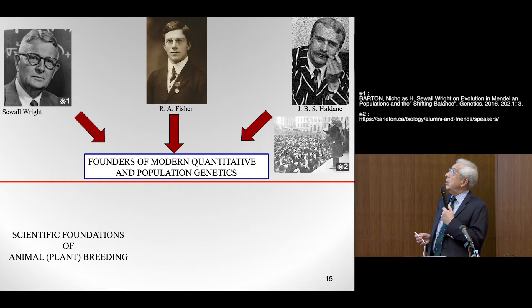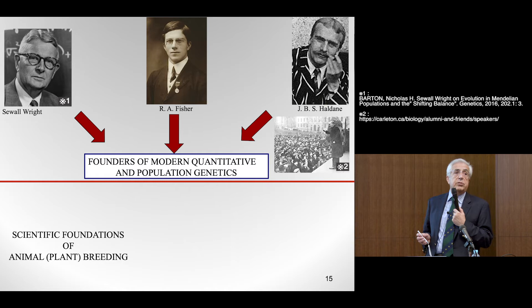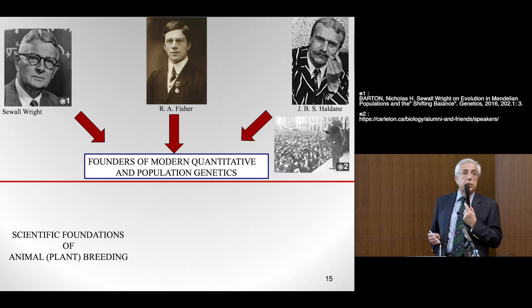Haldane was a mathematical geneticist who actually has a paper in 1948, which I think is the first time that the notion of Bayesian methods is used in genetics. He was using Bayesian methods to estimate the probability of a mutant in a population.